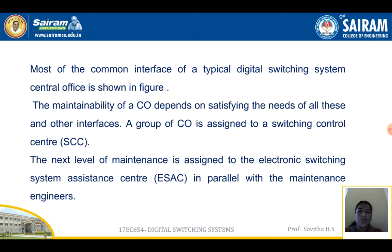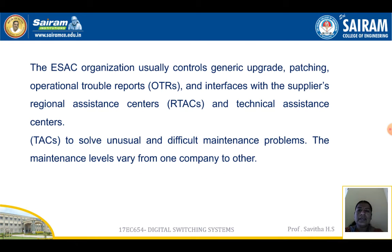A group of COs is assigned to a switch control center, that is SCC. The next level of maintenance is assigned to the electronic switching system assistant center, that is ESAC, in parallel with the maintenance engineers. The ESAC organization usually controls generic upgrade patching, operational trouble reports, and interfaces with the supplier's regional assistance centers and technical assistance centers, to solve unusual and difficult maintenance problems. The maintenance levels vary from one commodity to another.